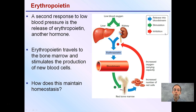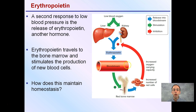Erythropoietin is another hormone mentioned as a second response to low blood pressure. Erythropoietin travels to the bone marrow and stimulates the production of new red blood cells. This is another way the body can increase blood volume to maintain homeostasis — erythropoietin stimulates production and increases the number of red blood cells.